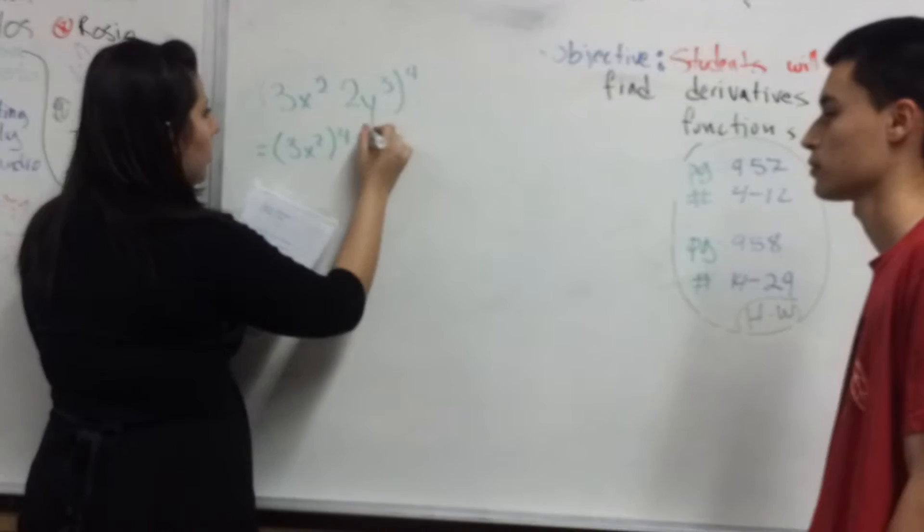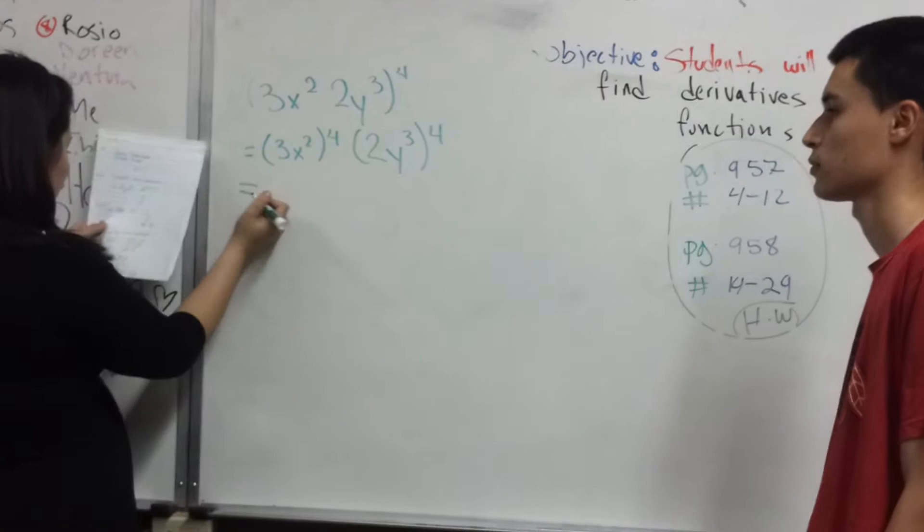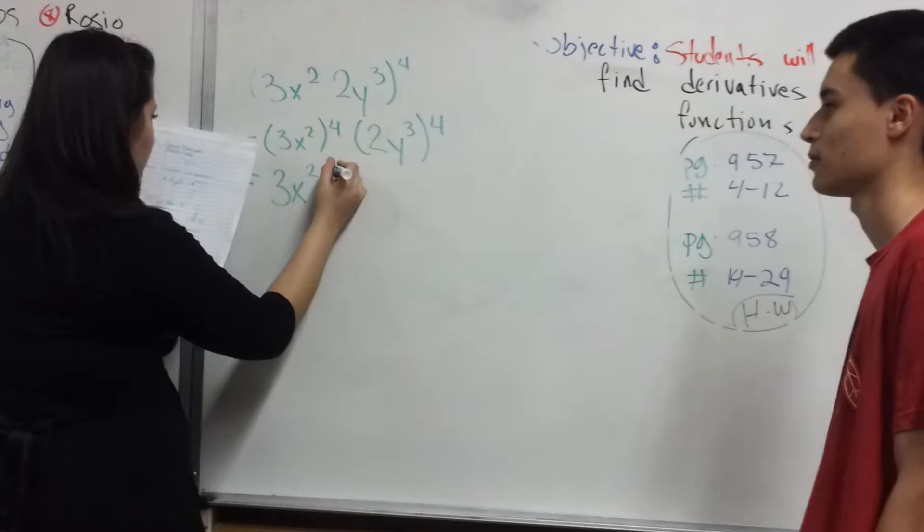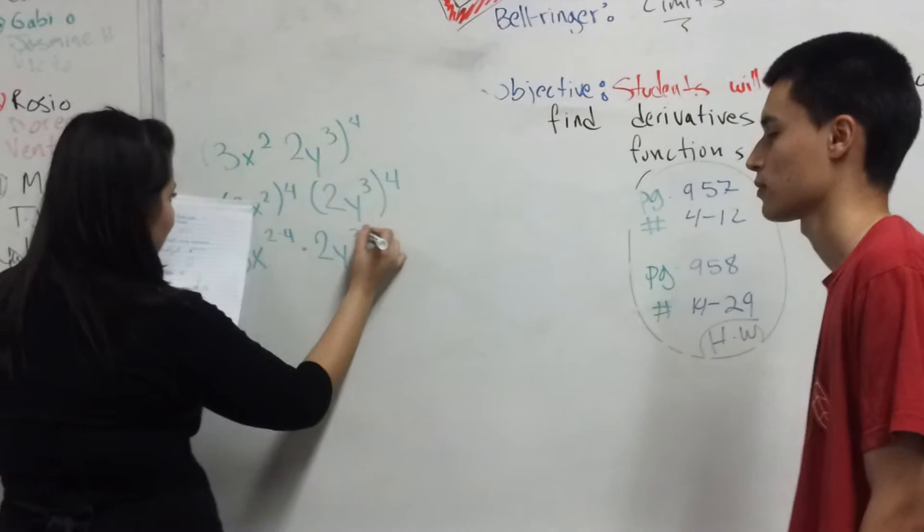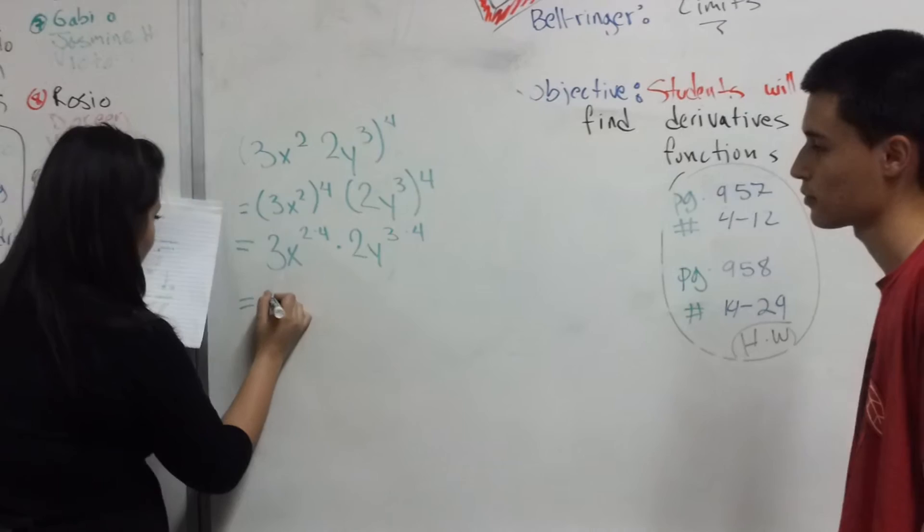which equals 3x squared times 4, times 2y to the fourth. That equals 2... 3x to the eighth.